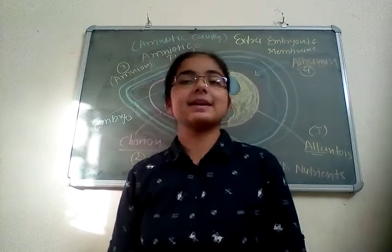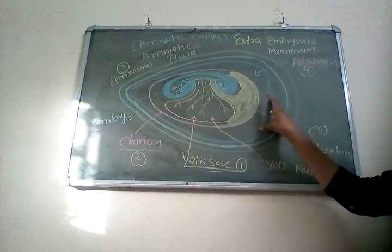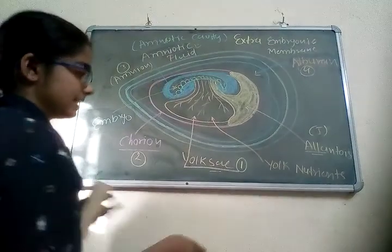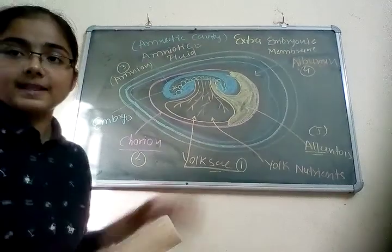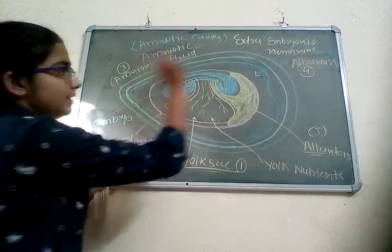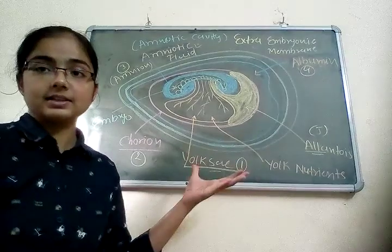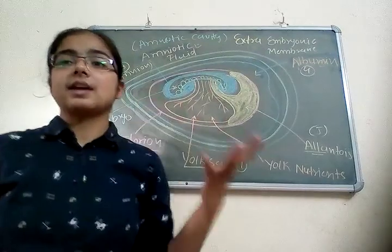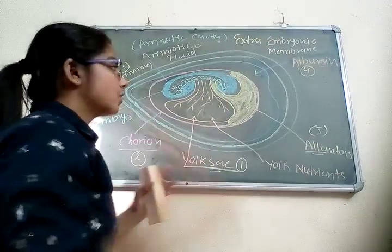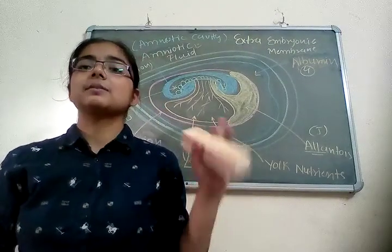Hello friends, today I will discuss about the extra-embryonic membranes which are present in the chick embryo. Here is a diagram of the extra-embryonic membranes. There are four types: yolk sac, chorion, amnion, and allantois. The word 'extra' means these membranes are not part of the development of the embryo itself.